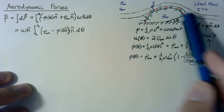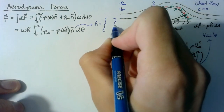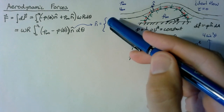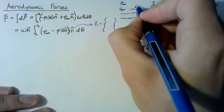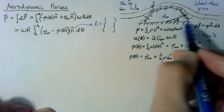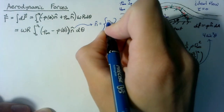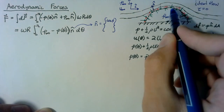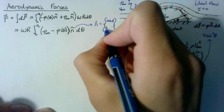Since n̂ changes depending on theta, we need to write it as a vector. We define i as pointing to the right (in line with the flow field) and j as pointing directly upward. When theta equals 0, cosine theta equals 1 and the normal points in the i direction, so the i component of n̂ is cosine theta. When sine theta equals 1, theta equals pi over 2, so the j component is sine theta. Thus n̂ equals (cos θ)î + (sin θ)ĵ.